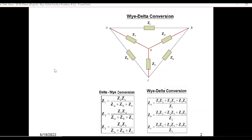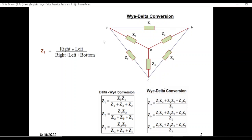Since I mostly prefer to convert from delta to Y, I follow this technique of calculating Z1. What we do is take the left and right arms — ZB and ZC — at the top, divided by all three: Z1, ZB, Z3. This is an easy way to memorize, but you don't have to — you can just see the formula table.